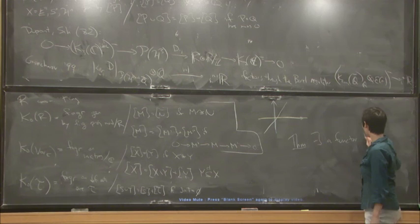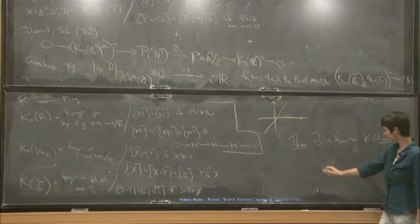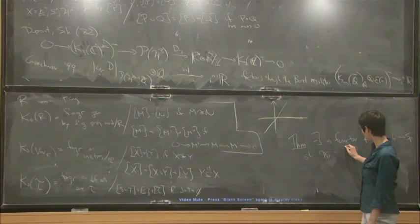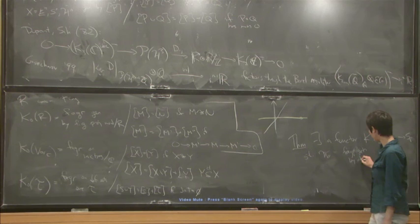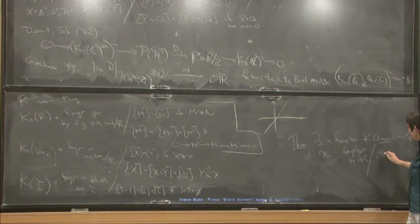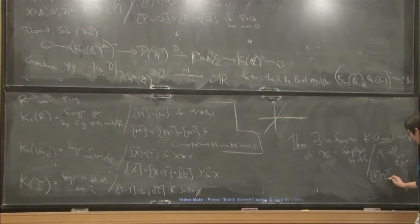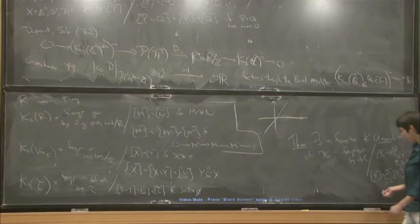The theorem is that there exists a functor K from the category of assemblers to the category of spectra, such that pi_0 is the free abelian group generated by objects of C modulo the relation that if you have a finite covering family where the pieces are suitably disjoint, then P equals the sum of the pieces.